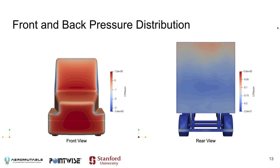Looking at the pressure results, the simulation performs as expected. There is a large stagnation point at the very front, and as the flow turns different corners, pressure drops as the flow speeds up to take those turns. Looking at the rear view of the truck, there is a highly low pressure region at the back — where the wake sits. This is all consistent with expected flow behavior past a semi-truck.